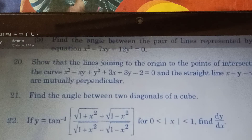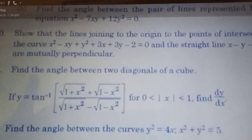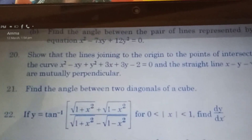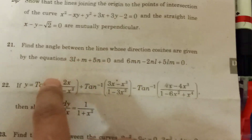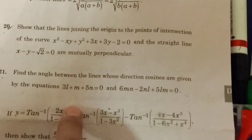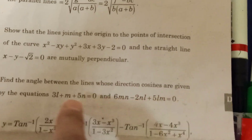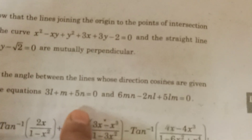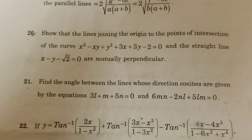Every 21st bit. Find the angle between the two diagonals of the cube — this is 3D geometry, bit 21 of AB. Find the angle between the two lines where the direction cosines are given: 3L plus M plus 5N equal to 0, and 6MN minus 2NL plus 5N equal to 0. This is bit 21.